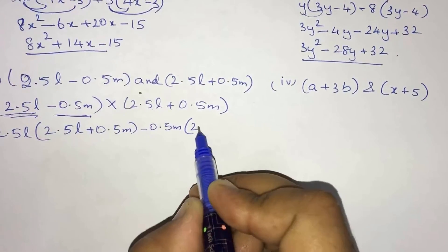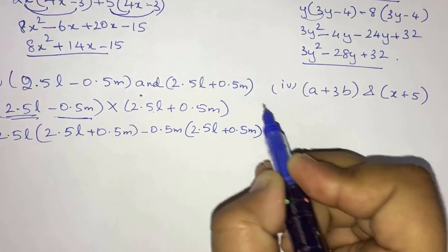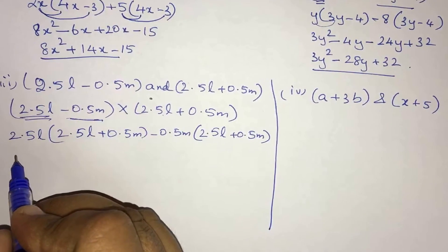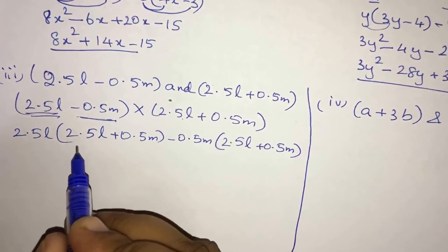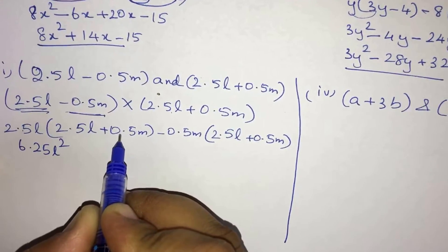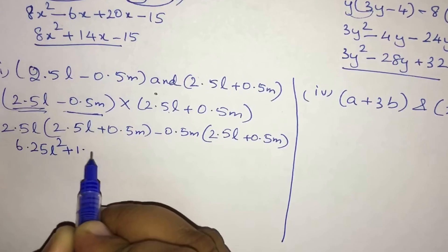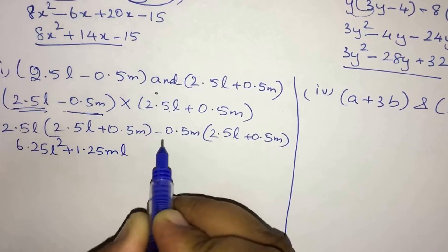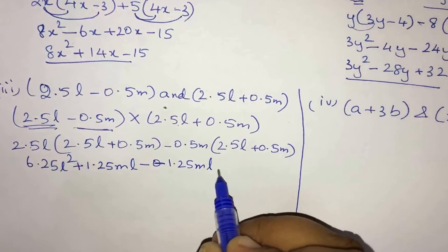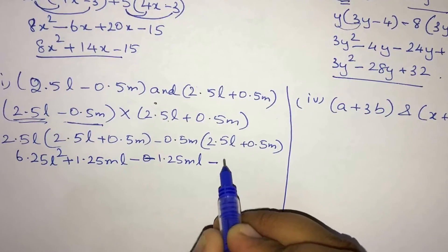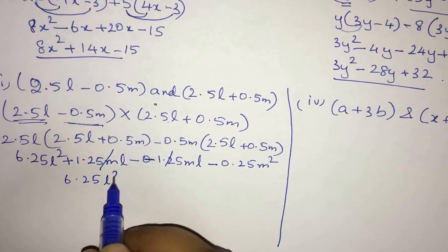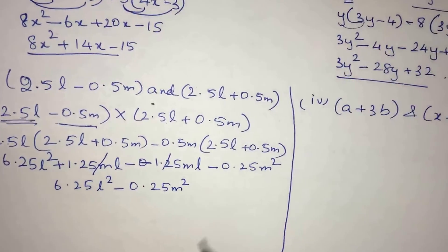Taking the first term 2.5L and multiplying with (2.5L + 0.5m): 2.5L into 2.5L gives 6.25L², and 2.5L into 0.5m gives +1.25Lm. Then -0.5m into (2.5L + 0.5m) gives -1.25Lm minus 0.25m². The Lm terms cancel, giving 6.25L² - 0.25m².